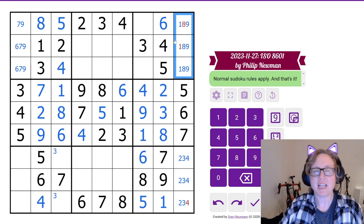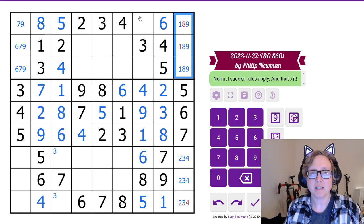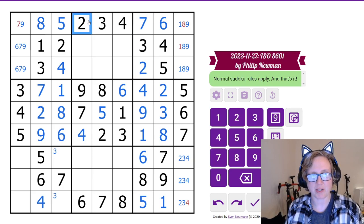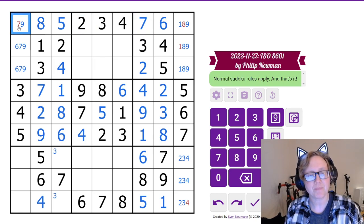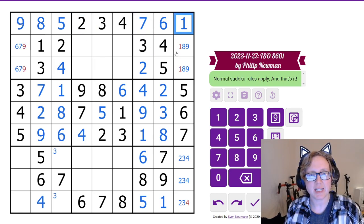Now we still need 1, 8, and 9 in the column, and that means that in this region we still just need 2 and 7, which have to go this way around, thanks to the 2 in row 1. So that's now a 9 and a 1.